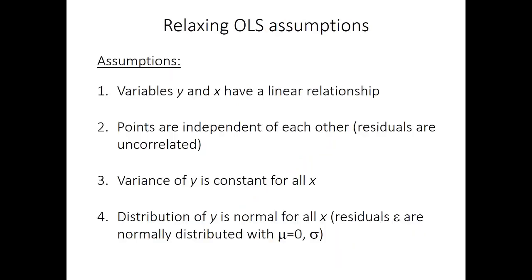We'll focus on the assumption that points must be independent of each other — in other words, the residuals should be uncorrelated with residuals of previous points. Generalized least squares regression is a method you can use when there is significant correlation between residuals. This most often occurs with time series data, which this video will focus on primarily, but GLS regression can also be used in cases of spatial correlation of residuals.